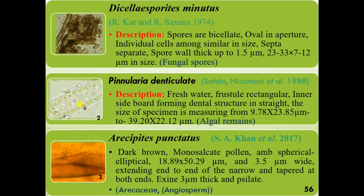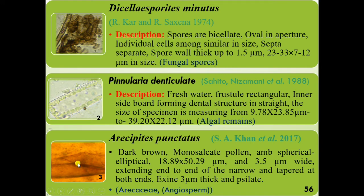Description of isolated palynomorphs: this specimen belongs to a fungal spore — the spore is bicellate with an oval aperture. This specimen belongs to algal remains, with a dental-like structure present; the species name is Fenulera denticulate. This specimen belongs to angiosperm — a monosulcate pollen grain, spherical, dark brown in color.